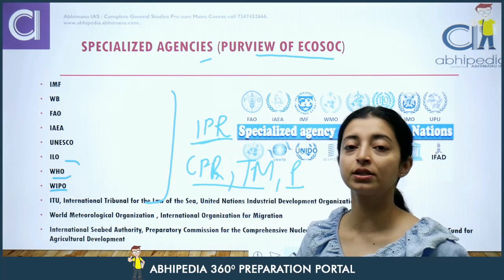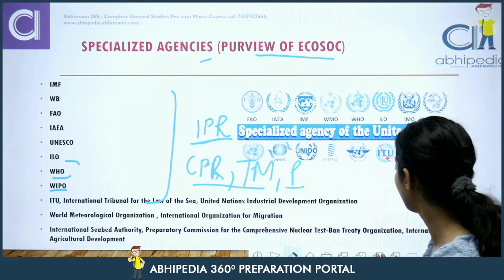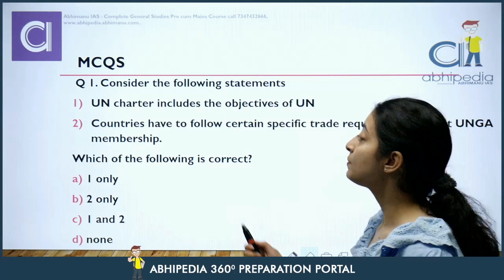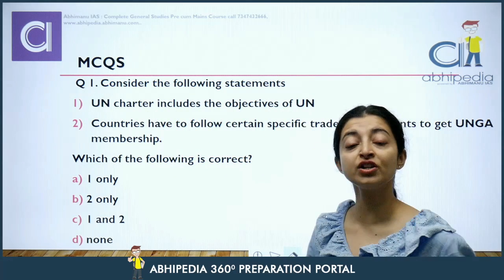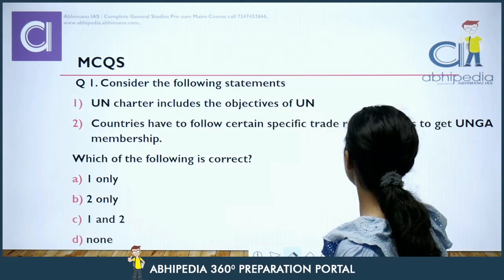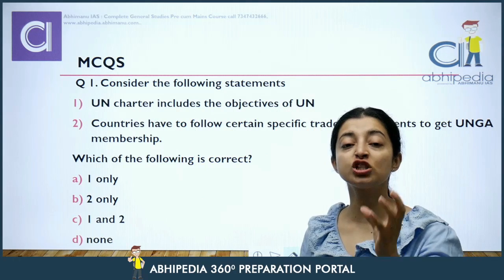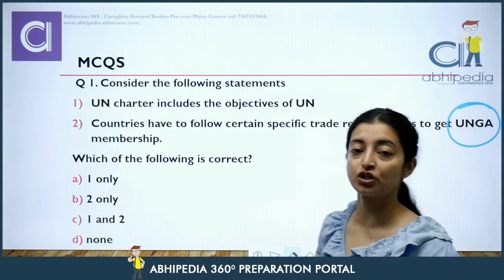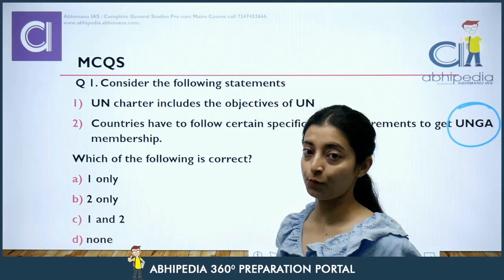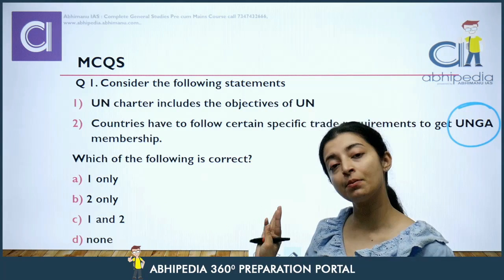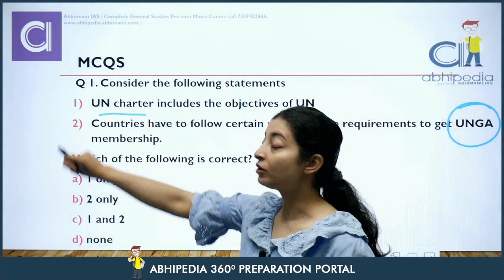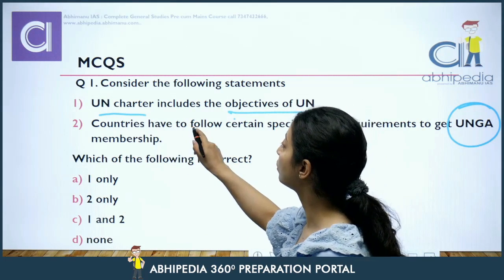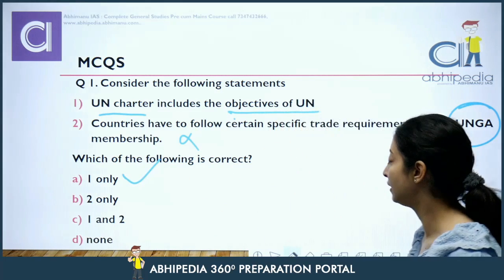Let's do some MCQs to check retention. First: Does the UN Charter include the objectives of the UN? — Yes, the UN Charter was the treaty through which the UN was formed, so of course it includes the UN's objectives. Second: Do countries have to follow specific trade requirements to get UNGA membership? — No, UNGA is an all-representative body; there are no specific trade requirements to join. So the first statement is correct and the second is wrong.